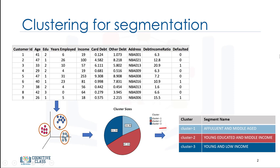For example, the first group is made up of affluent and middle-aged customers. The second is made up of young, educated, and middle-income customers. And the third group includes young and low-income customers.